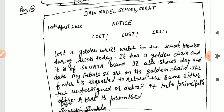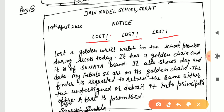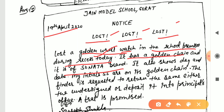For the lost notice, write the same school name — Jay Model School, Surat — then the word 'Notice,' and the title 'Lost' (written three times for emphasis) or 'Found.' Include the date on the left side. Start with: 'Lost — golden wristwatch in the school premises during recess today.' You must mention when and where it was lost. Then give its physical description: it has a golden chain, is of the Sonata brand, and shows the day and date.